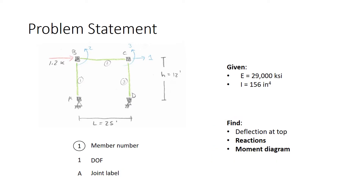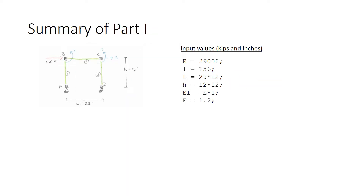In this video, we'll be looking at reactions and the moment diagram, because we already found the deflection at the top as a natural outcome of the stiffness method. Let's remind ourselves of what we did in the first part of this problem, in the first video.